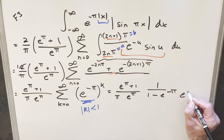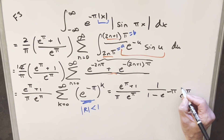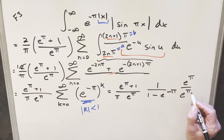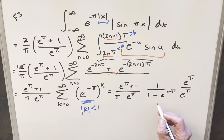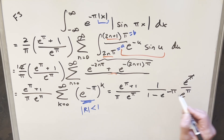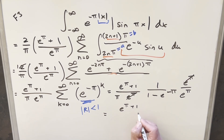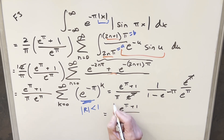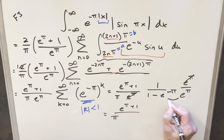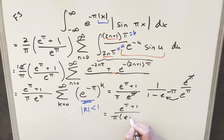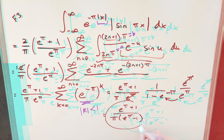Since |e^(−π)| < 1, the geometric series formula applies: the sum equals 1/(1 − e^(−π)). To simplify, multiply numerator and denominator by e^π: the numerator becomes e^π, and the denominator becomes e^π − 1. Combining with the (e^π + 1)/e^π factor from earlier, the e^π cancels, leaving (e^π + 1) in the numerator and π(e^π − 1) in the denominator. So our final answer is (e^π + 1) / [π(e^π − 1)].